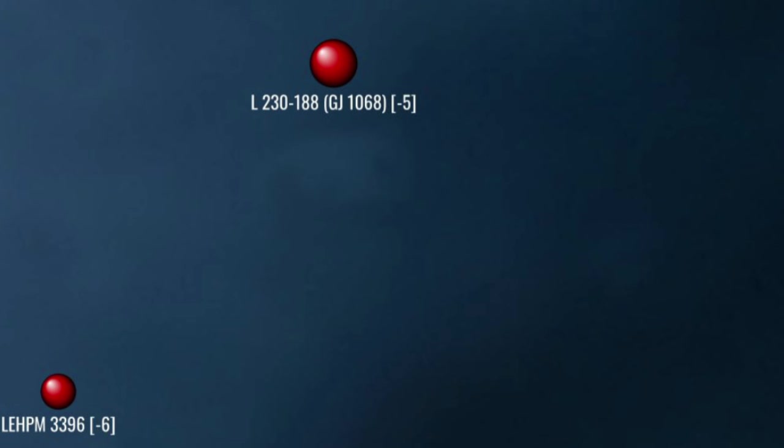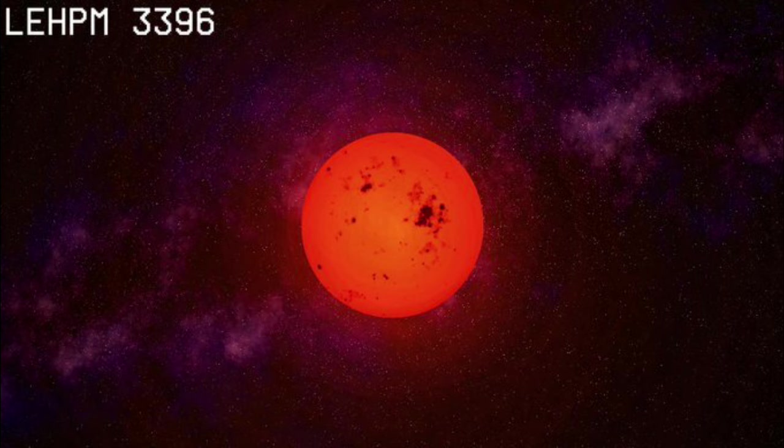Rimward again, east and 1 parsec south, we arrive at LEHPM 3396, a very dim red dwarf verging on brown dwarf.